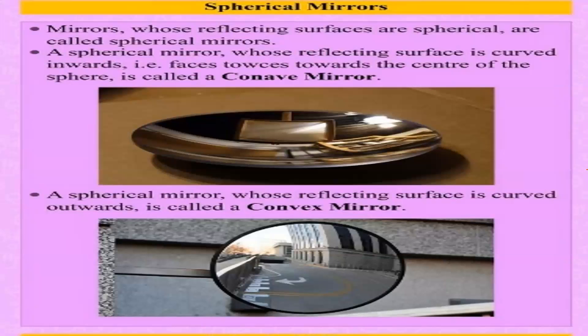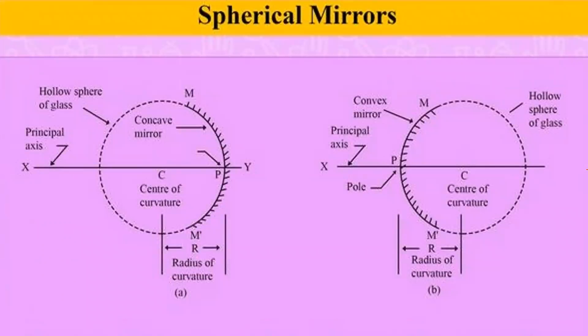Mirrors whose reflecting surfaces are spherical are called spherical mirrors. A spherical mirror whose reflecting surface is curved inwards is known as a concave mirror, whereas a spherical mirror whose reflecting surface is curved outwards is known as a convex mirror. The important terms for spherical mirrors — whether concave or convex — include the principal axis, center of curvature, the pole, the radius of curvature, and the principal focus.